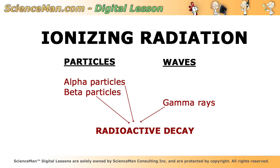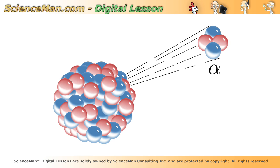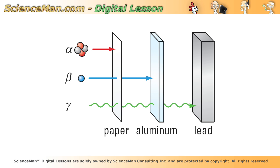Here we have the nucleus of an unstable isotope, and it just happens to emit ionizing radiation in the form of an alpha particle. So just how dangerous is this alpha particle? Well, that depends. Alpha particles are pretty wimpy — they can't even penetrate paper or skin. In fact, alpha particles' radiation can be useful.